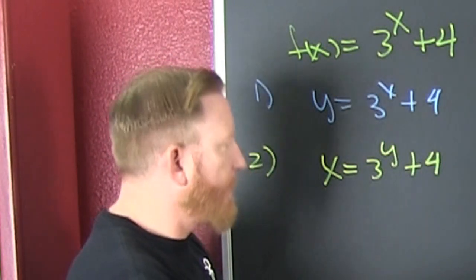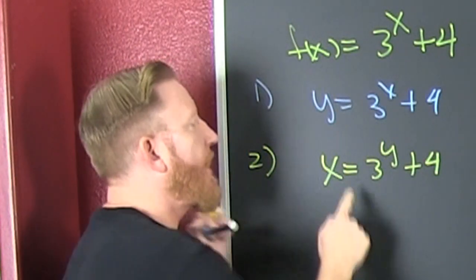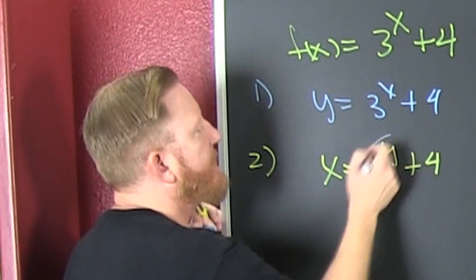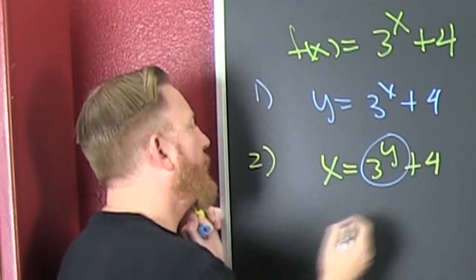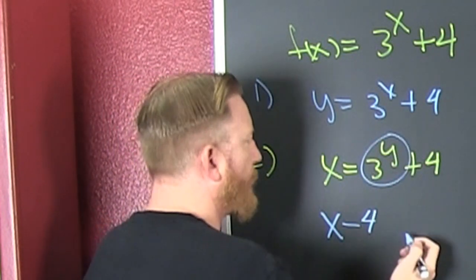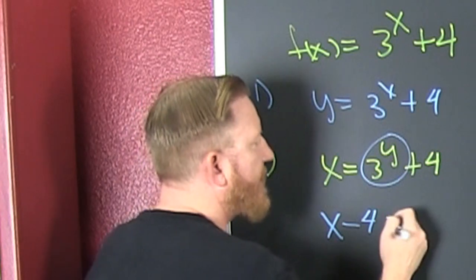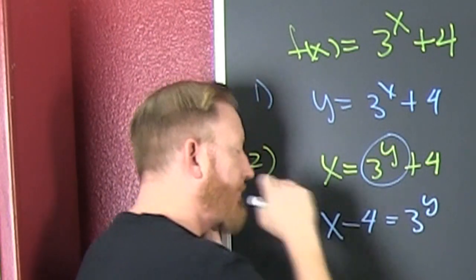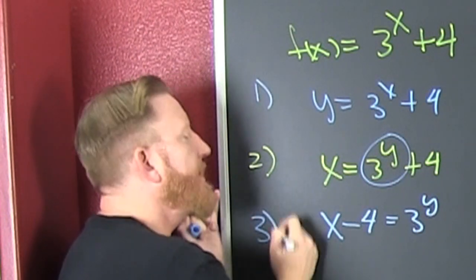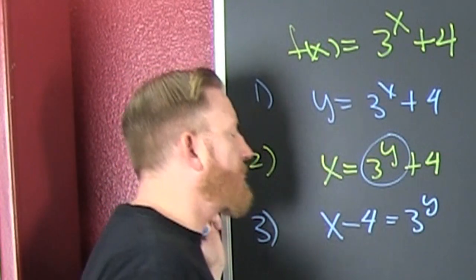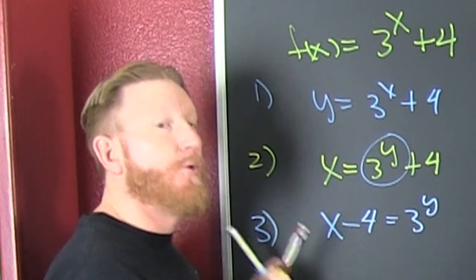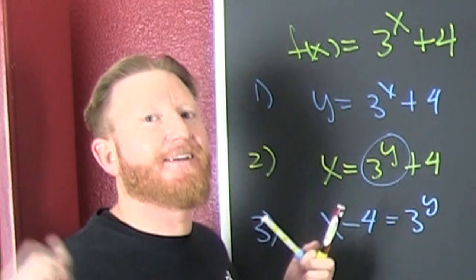Now we're on to step three: we're solving for y. To solve for y, we need to isolate that guy. So x minus four is going to be 3 to the y. How do I get that y out of that exponent?